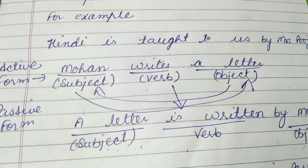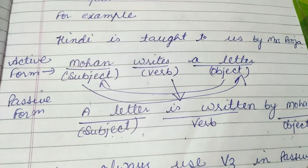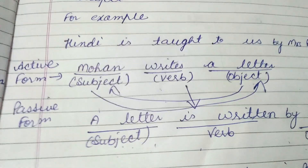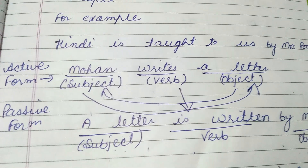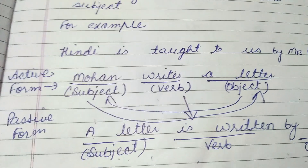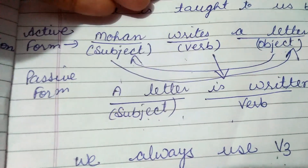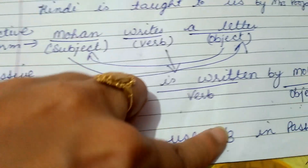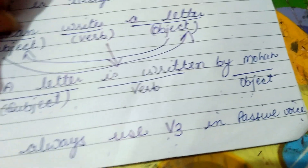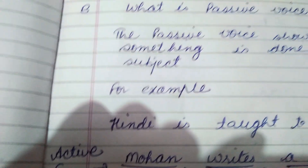In my next video I will tell you how to change active into passive form in different tenses. You have to keep in mind that when we change active into passive form, we always use V3 — the third form of the verb — in passive voice. Thank you.